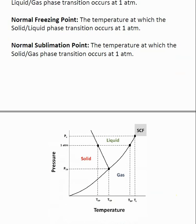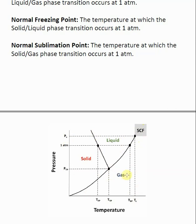On a typical phase diagram, these points are easy to find. The critical point is at the end of the vaporization line — tracking left gives the critical pressure, and tracking down gives the critical temperature. The triple point is where all three lines converge — tracking left gives the triple point pressure, and tracking down gives the triple point temperature.